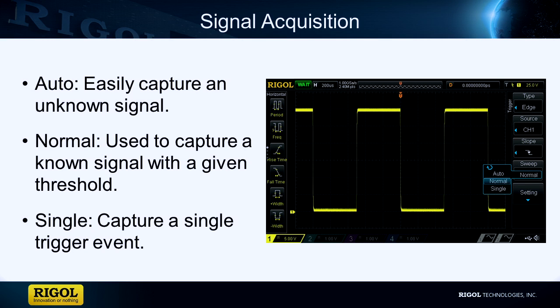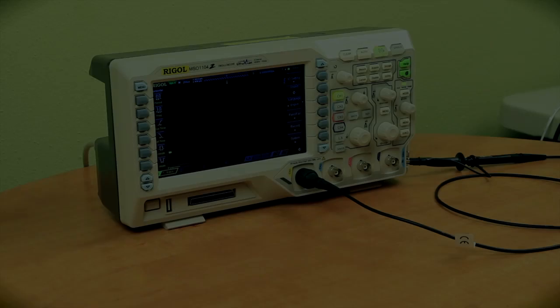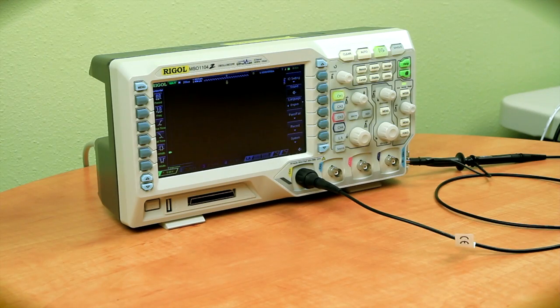Auto trigger is a triggering technique that forcibly samples a waveform with or without a signal. Normal trigger will only trigger when a waveform passes a given threshold, and single trigger will trigger once the waveform passes a given threshold and will then stop capturing a new signal.